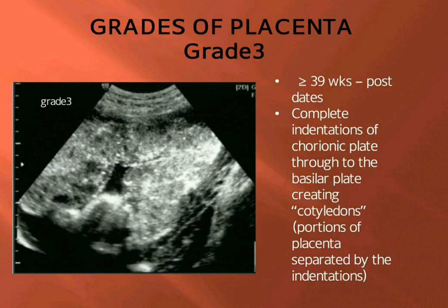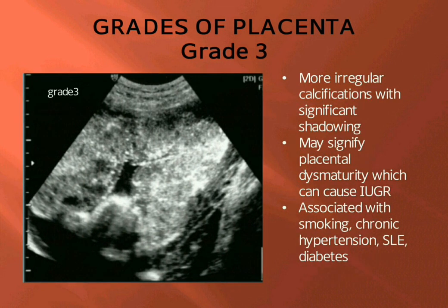Grade 3 appears after 39 weeks. There are complete indentations of the chorionic plate through to the basal plate, creating cotyledons, which are portions of the placenta separated by the indentations. Grade 3 also shows more irregular calcifications with significant shadowing.